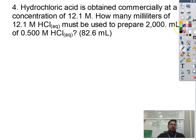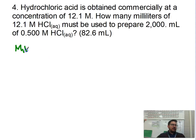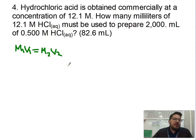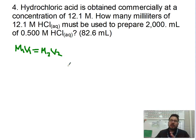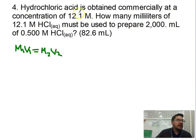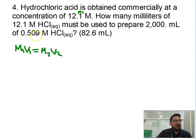Task Number Two uses a new equation: M1V1 = M2V2. This is called a dilution equation. What you're doing is taking the original liquid and diluting it by adding water to get a new solution. The problem says: hydrochloric acid is obtained commercially at 12.1 molarity — this is Molarity One. How many milliliters of the 12.1 molarity HCl must be used to prepare 2,000 milliliters of a 0.500 molarity solution? That 0.500 is Molarity Two.